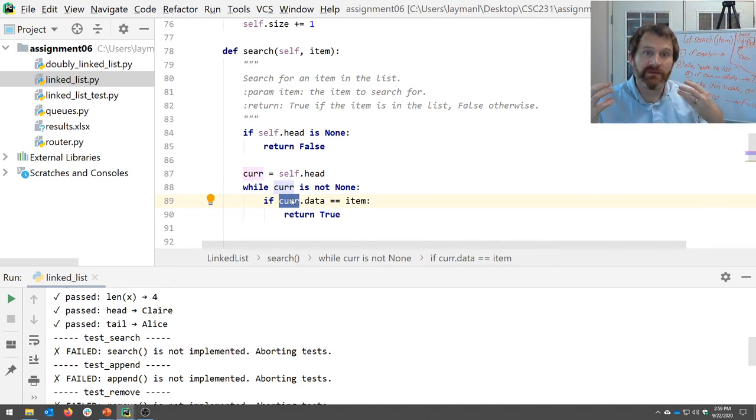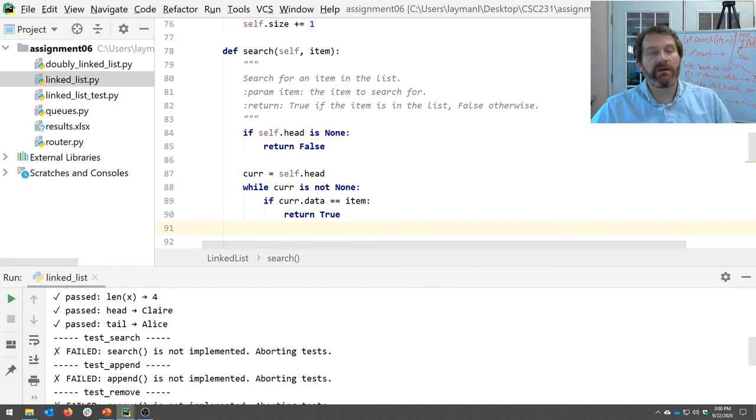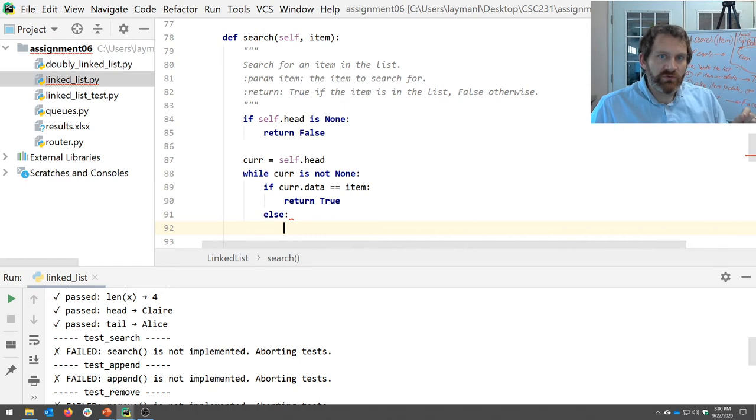Again, remember, cur is a reference to a node. It starts out by referring to the head. It's a node, so it has data. Nodes have data, they have a data attribute or a data variable, and they have a next variable. Cur.data is currently the head, and what's its data value? In this case, it would be Bob. So is Bob equal to the thing you were searching for? If so, great, I'm done. If not...